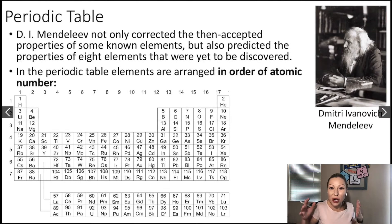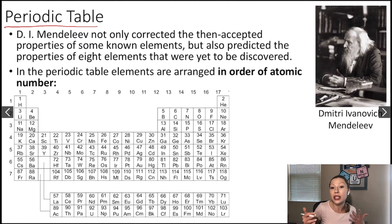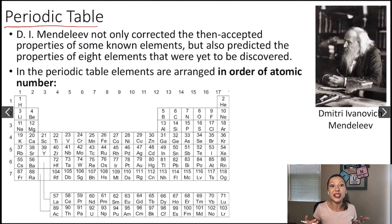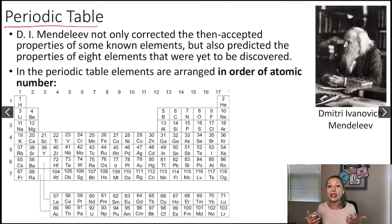Hello guys. In this video we are going to talk about a very exciting topic: the periodic table. It was first published by Dmitry Ivanovich Mendeleev in 1869. While he published the periodic table, he not only corrected the then accepted properties of some elements that were already known, but he also predicted the properties of eight elements that were yet to be discovered.